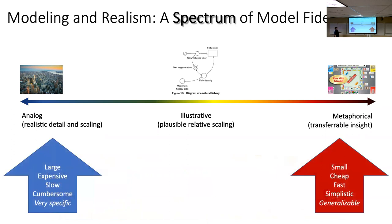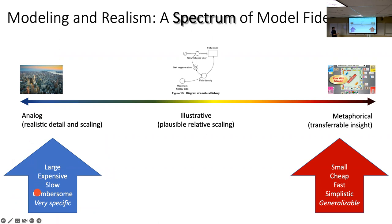On the metaphorical side, the advantages are that models are small, cheap, fast, simplistic, and generalizable. Even though they leave a lot out, the cost comes with the benefit of being easy to build, run, analyze, and potentially generalizable. On the other side, if you throw in everything but the kitchen sink, you get a model that's large, expensive, slow, and very specific. It may help you understand the peculiarities of one place, but you're only really going to understand that place.